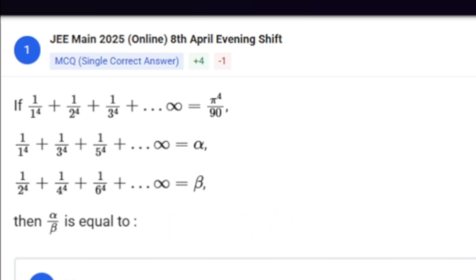And we are asked about some different variants where we have the odd numbers 1 upon 1 to the power 4 plus 1 upon 3 to the power 4 and so on, which we are calling alpha, and then the even version which we are calling beta. They have asked us alpha by beta.